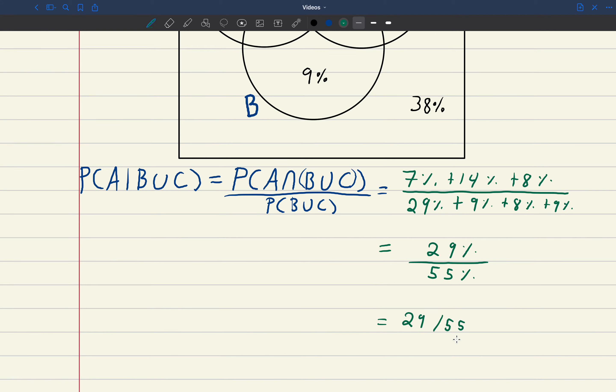Or we could write it as an approximation percentage. And 29 over 55, if I plug that in my calculator, that's going to be roughly 53%.